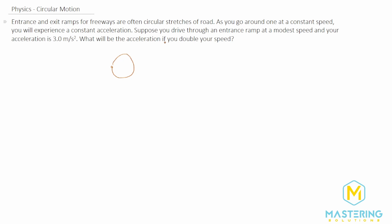They ask us that if we drive through this entrance ramp at a modest speed and our acceleration is 3 meters per second squared, what will the acceleration do if we double our speed? Before we start, let's write the formula for acceleration in circular motion, which is v squared over r.